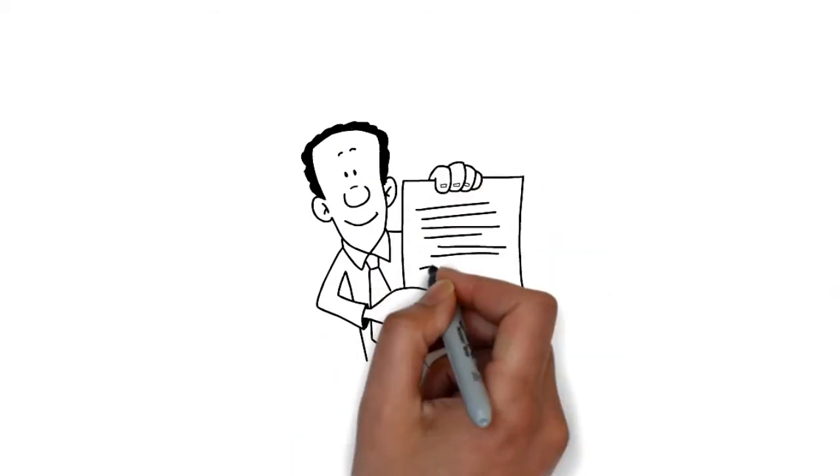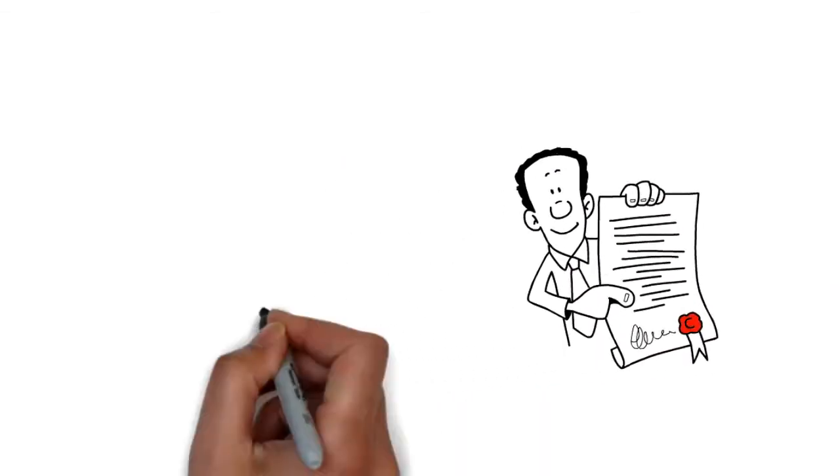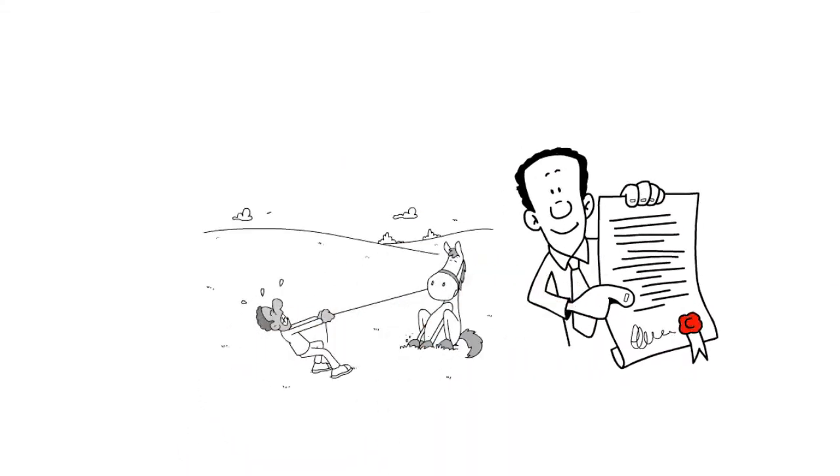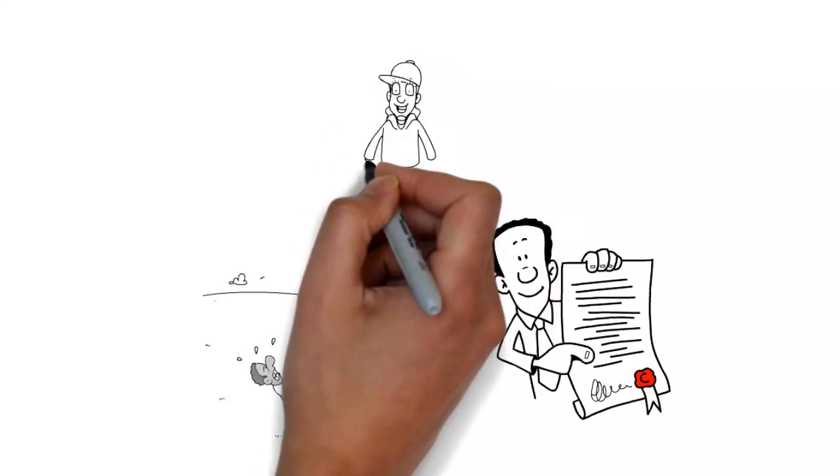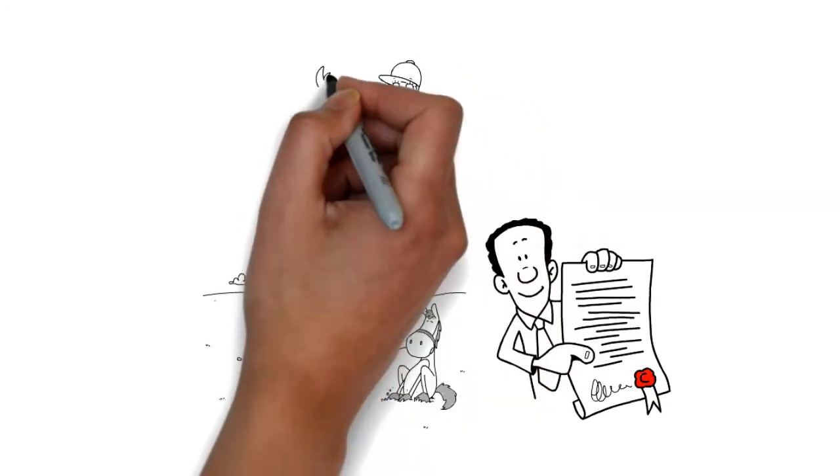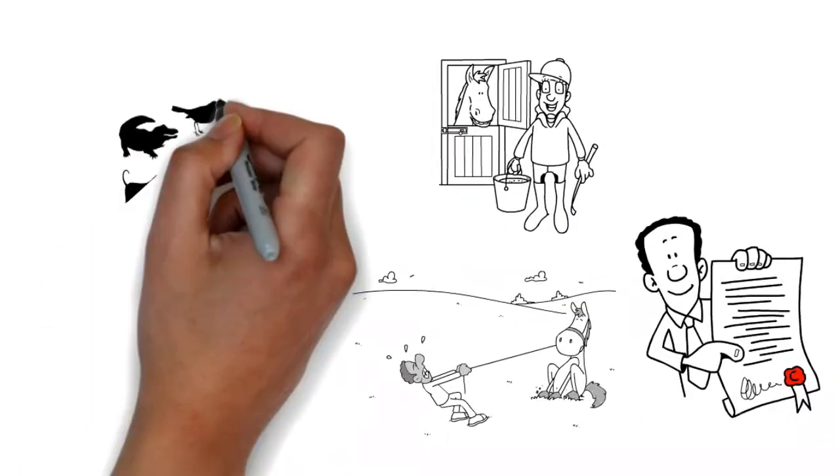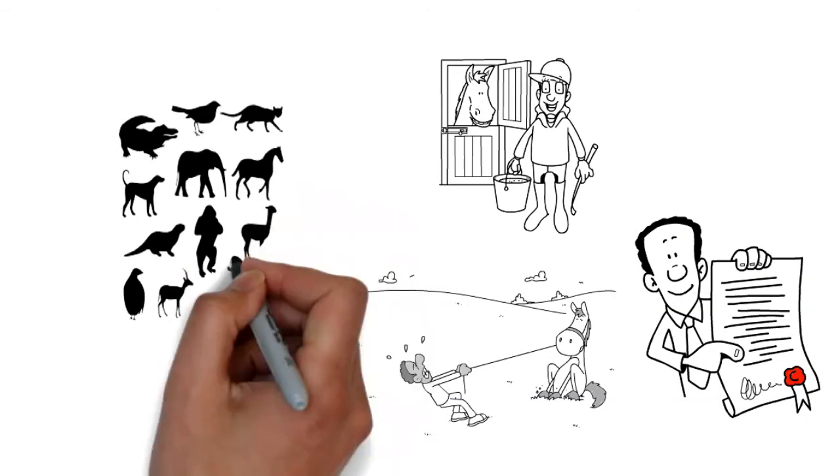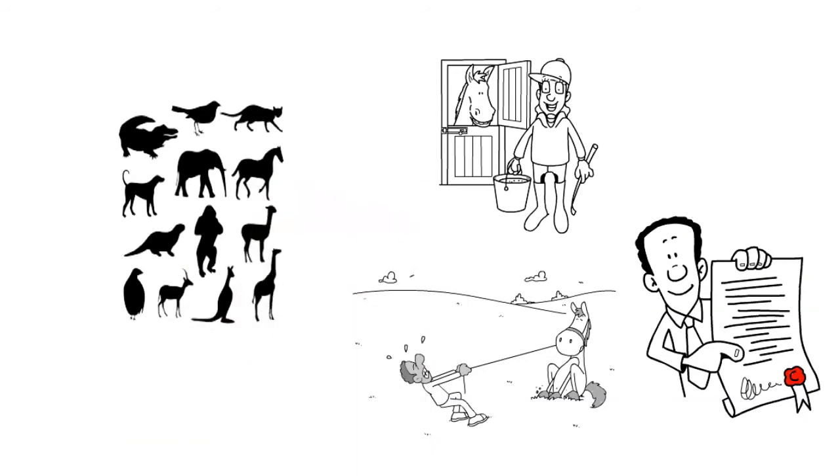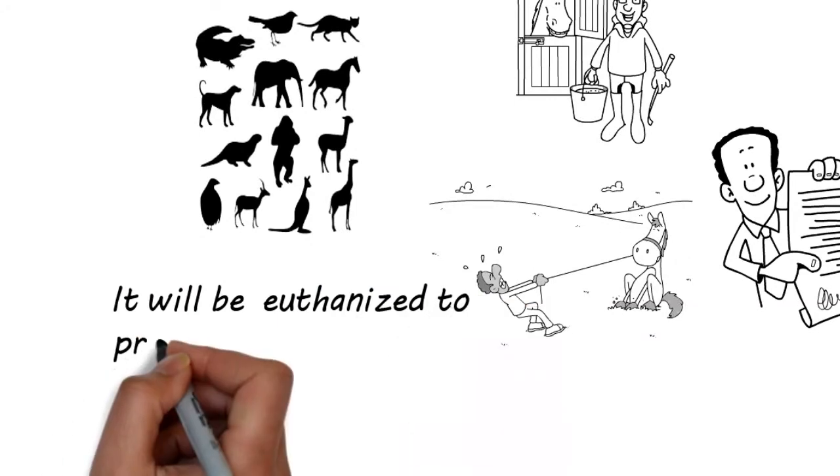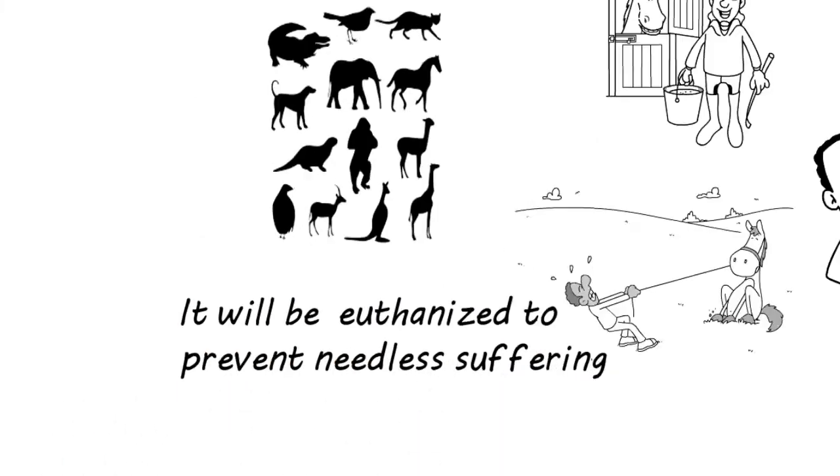If it is any consolation, researchers who run experiments on animals make an effort to prevent unnecessary suffering. Usually animals who recover from an experiment or surgery are given a treatment that prevents pain. Also, if an animal suffers from chronic bleeding or damage or deformity that cannot be treated after an experiment, it will be euthanized to prevent needless suffering.